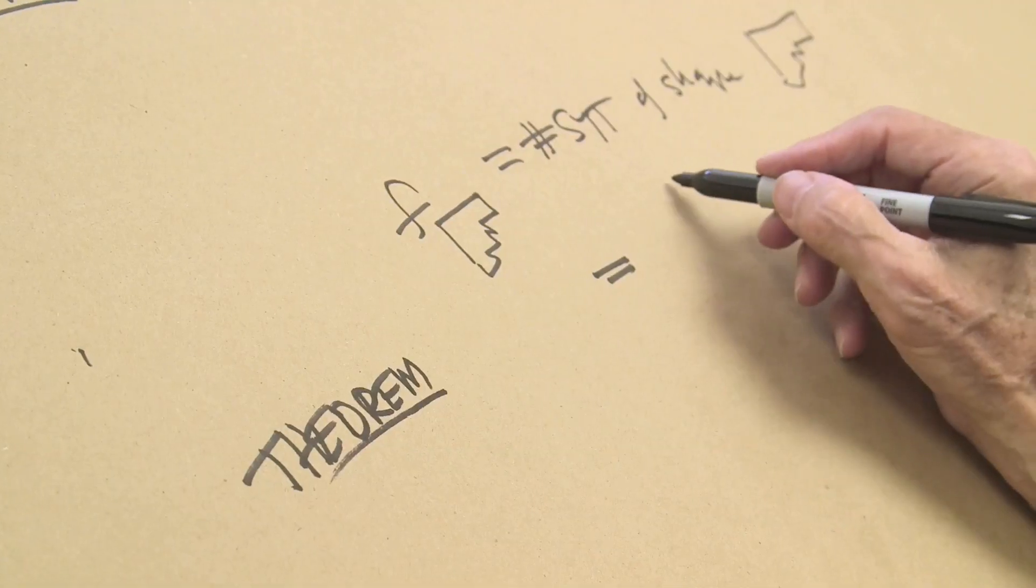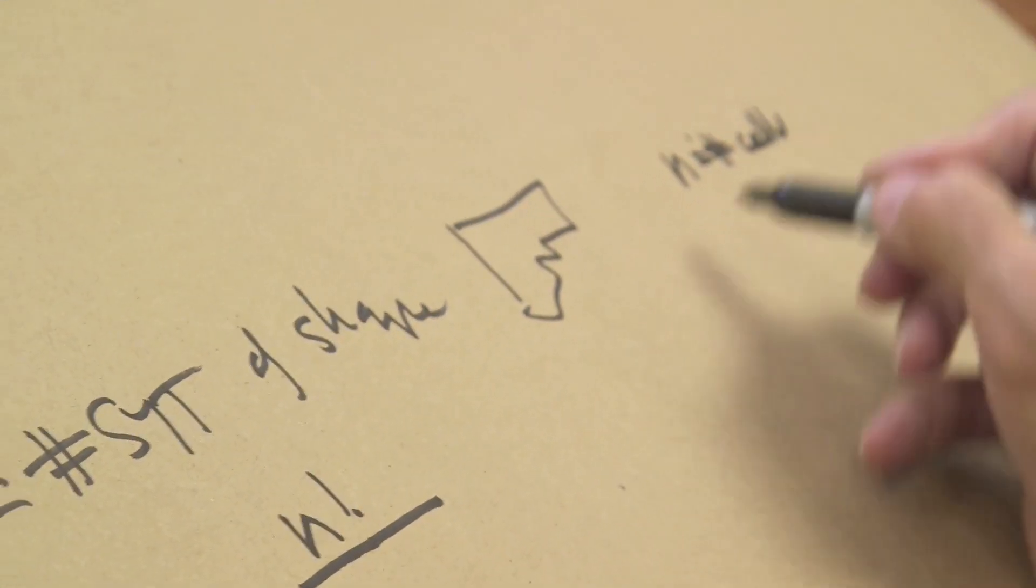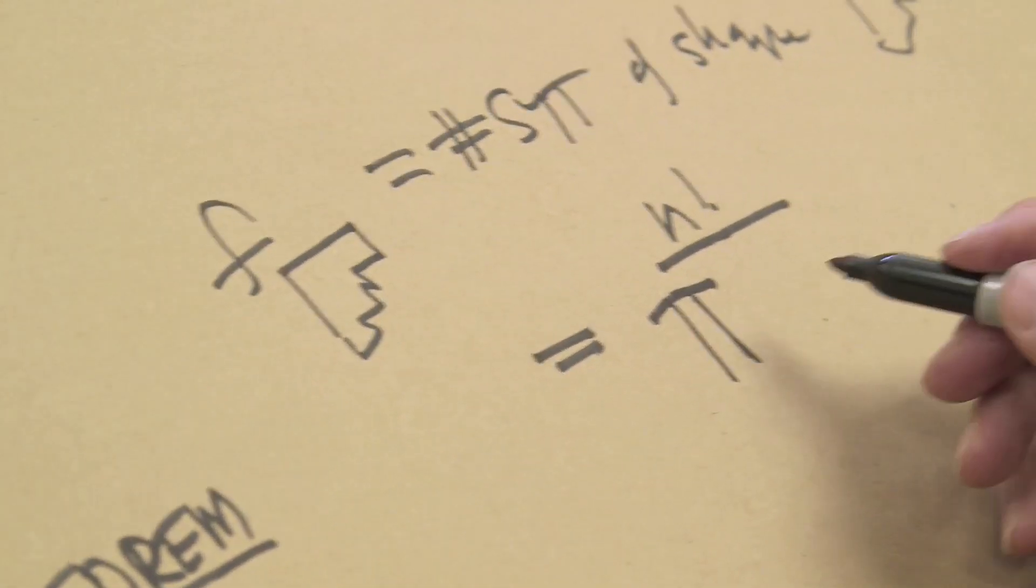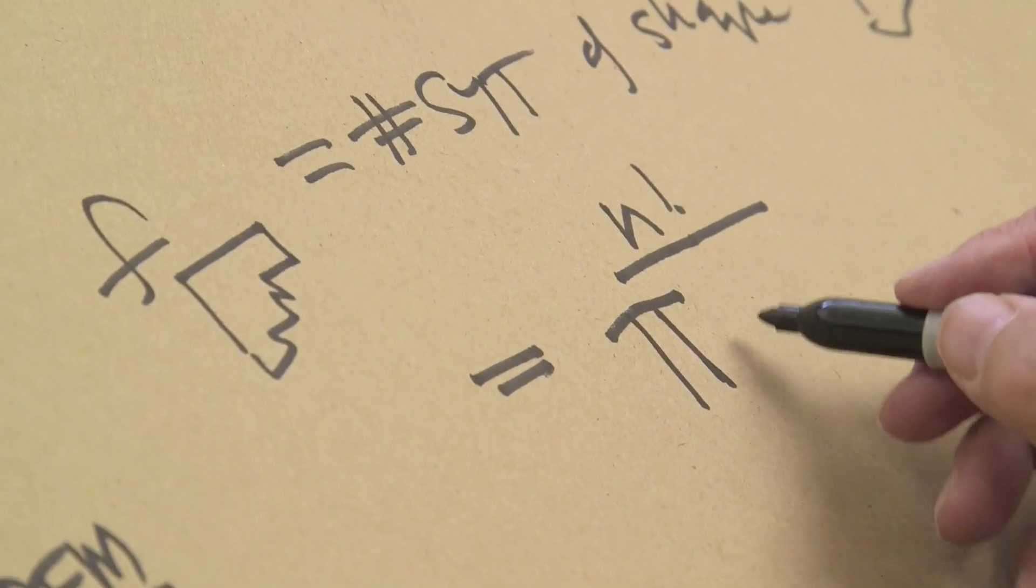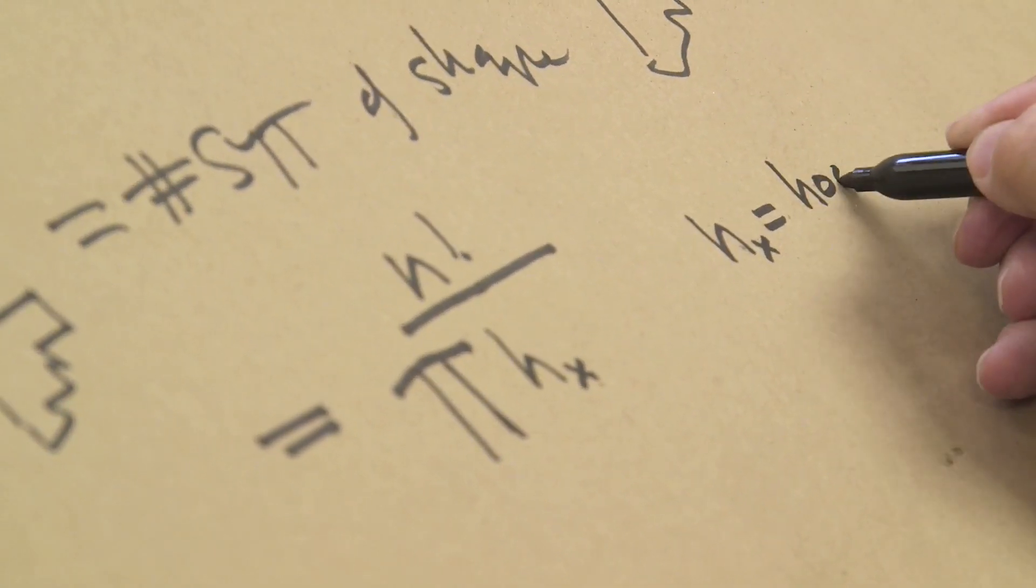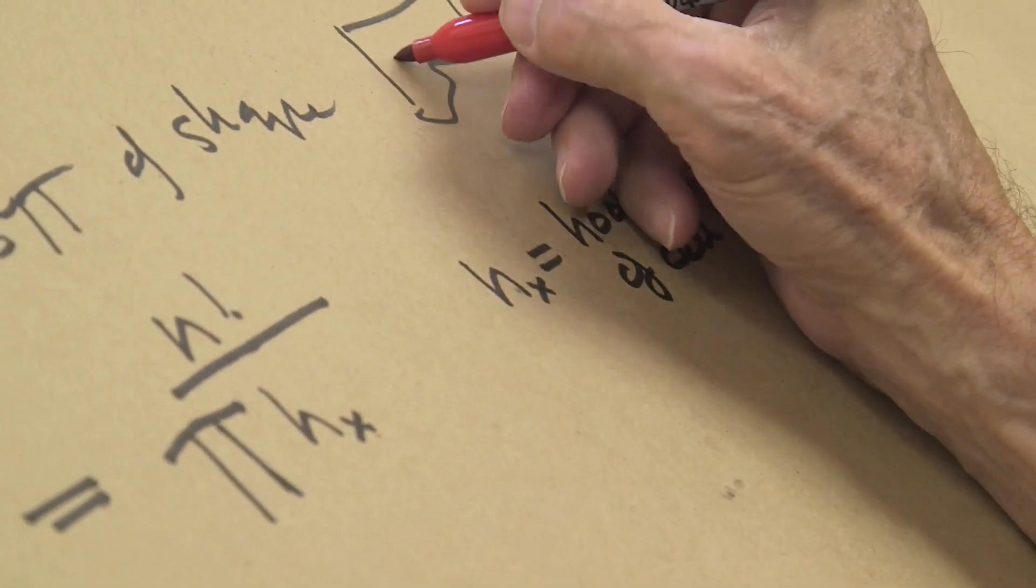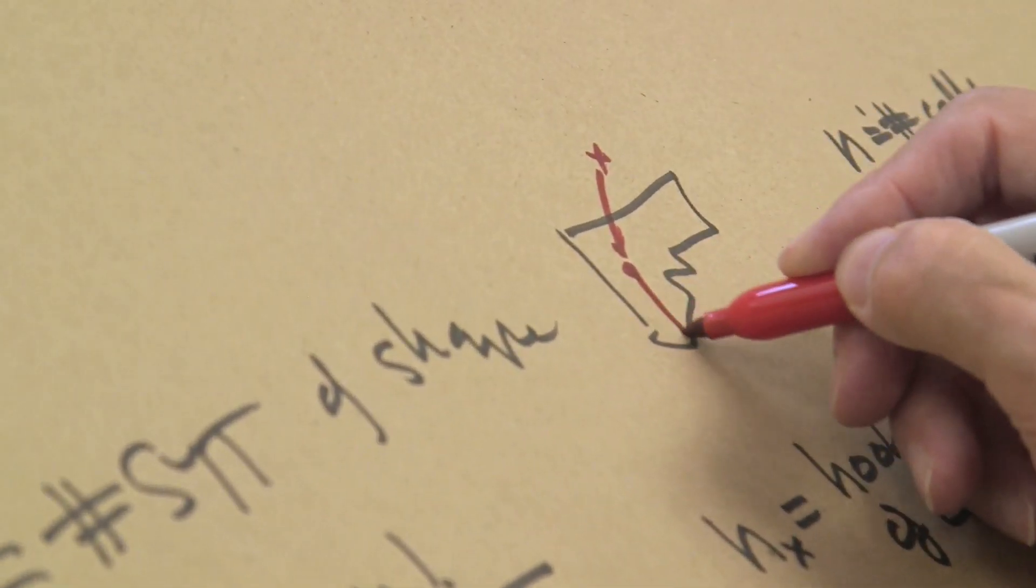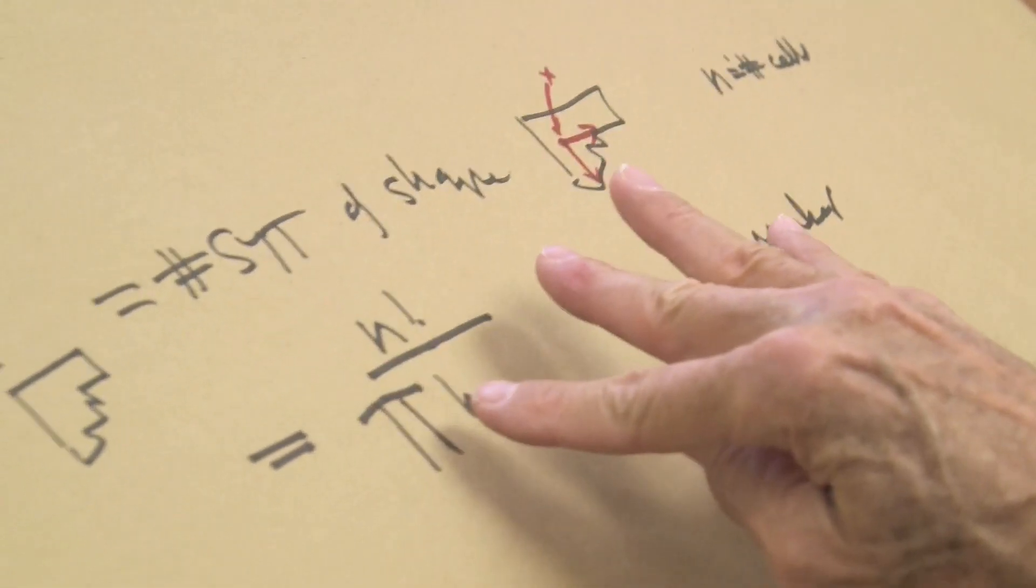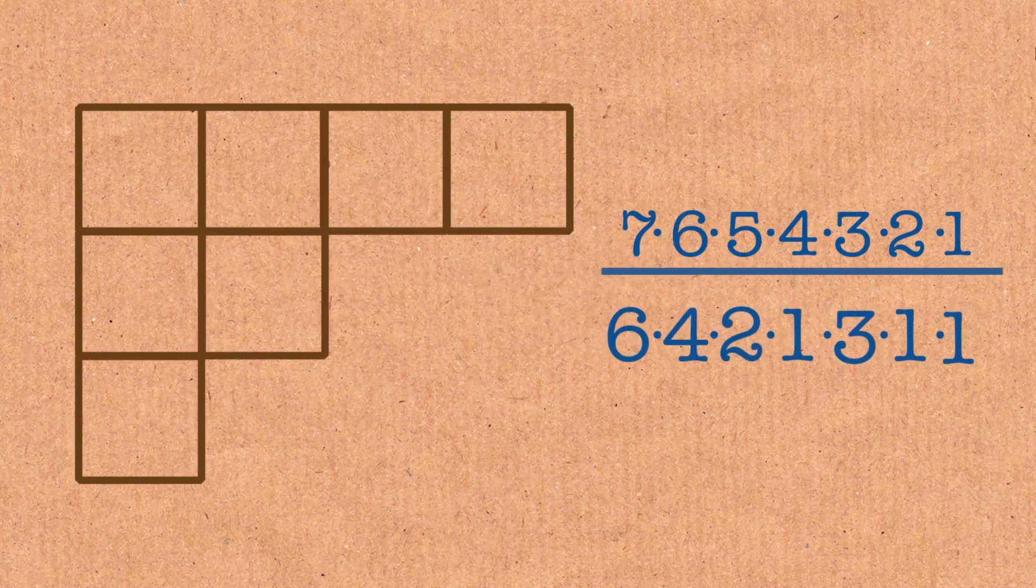The theorem is that this equals n factorial, where n is the number of cells, divided by the product over a bunch of terms. Not the famous number, it just means product of h sub x, where h sub x is the hook number of cell x. For example, if x is that cell right there, then the hook number is the number of cells in its hook. You compute all those numbers and divide by the product, and that gives you the number of standard Young tableaux.